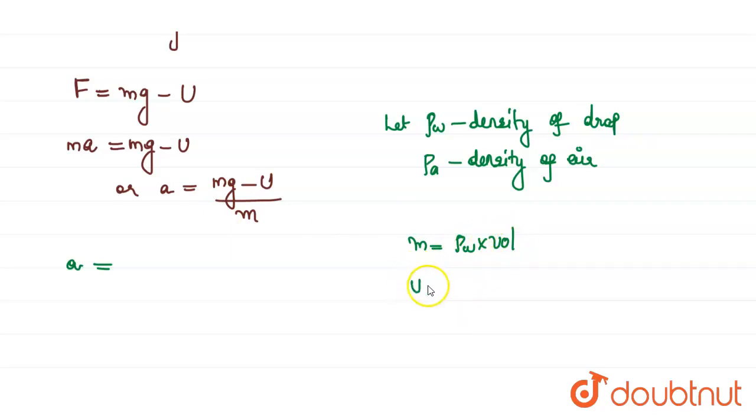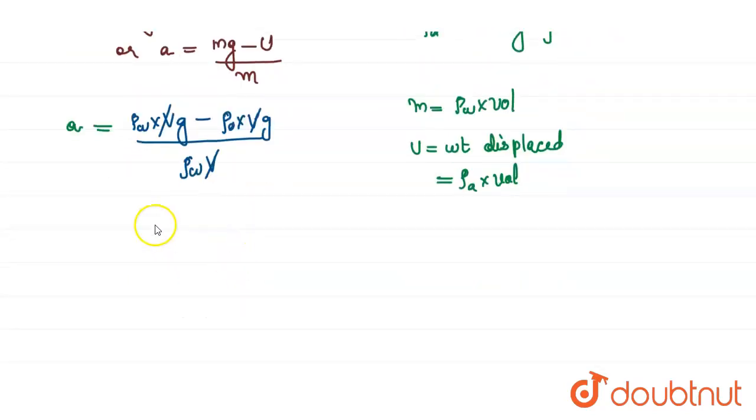What is upthrust provided? Upthrust is equal to weight displaced by that drop, which equals density of air times volume. We can substitute these values in the equation. So we get ρw × V × g minus upthrust, which is ρa × V × g, divided by M. M is ρw × V. We can cancel the volume terms and take g as constant.